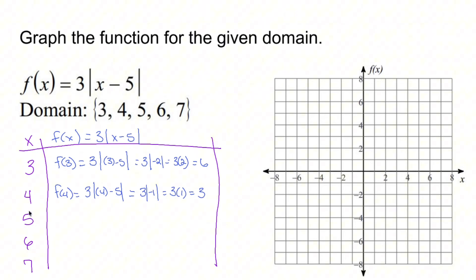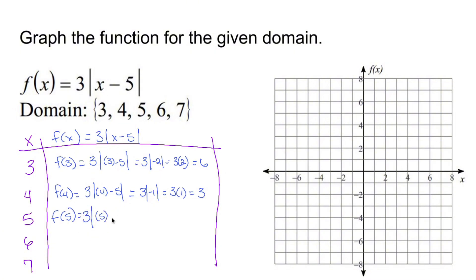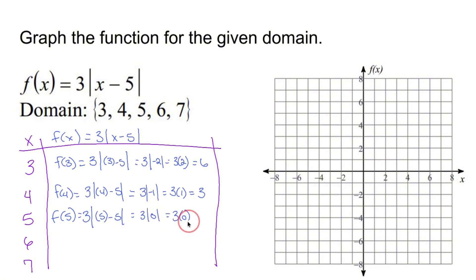Let's do it again with five. F of five is going to equal three times the absolute value of five minus five. Inside the absolute value, five minus five is zero. The absolute value of zero is zero. Easy peasy.